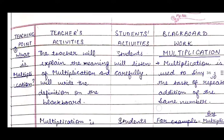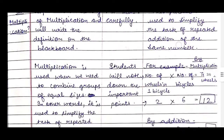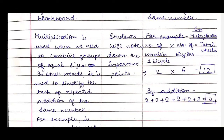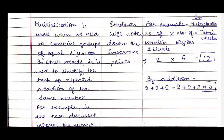Now comes the Presentation part, which is the actual teaching part. For this we need to make four columns in our lesson plan: teaching point, teacher's activities, students' activities, and blackboard work. The first teaching point is: What is multiplication? The teacher will explain the meaning of multiplication and write the definition on the blackboard. Students will listen carefully. We will write on the blackboard: 'Multiplication is used to simplify the task of repeated addition of the same number.'